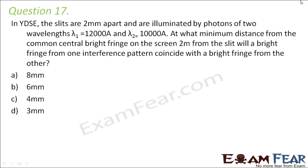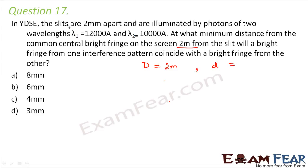Basically, here we are talking about two different wavelengths of light with which we have tried to perform this to get this interference pattern on the screen. The values given in this problem: capital D, the distance of the screen from the slit, is 2 meters. Small d, the distance between the two slits, is 2 mm.